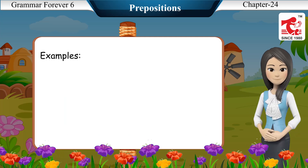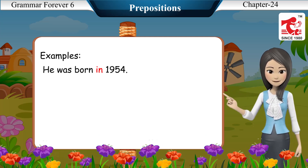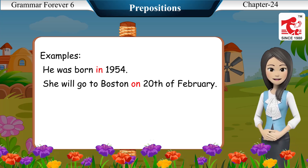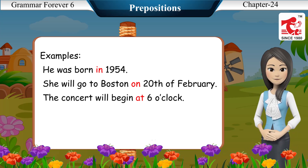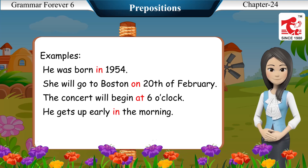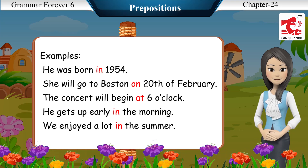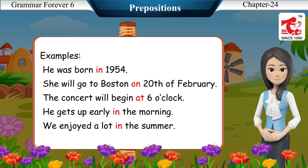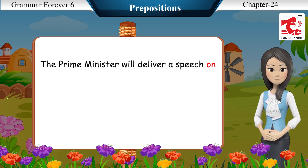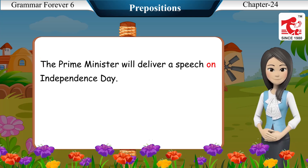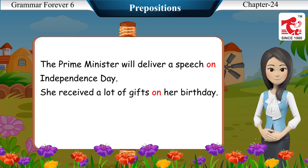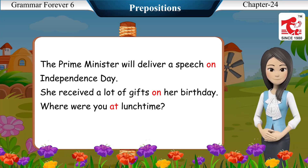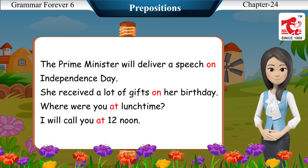Example sentences for time prepositions: He was born in 1954. She will go to Boston on 20th of February. The concert will begin at 6 o'clock. He gets up early in the morning. We enjoyed a lot in the summer. The Prime Minister will deliver a speech on Independence Day. She received a lot of gifts on her birthday. Where were you at lunchtime? I will call you at 1 to noon.